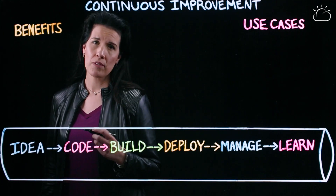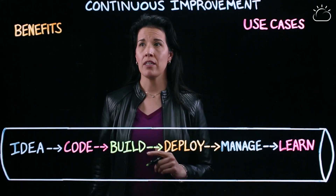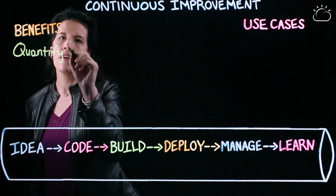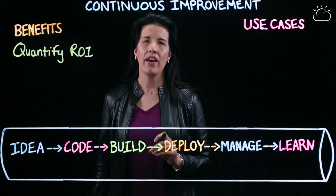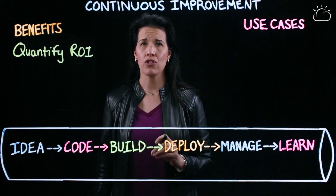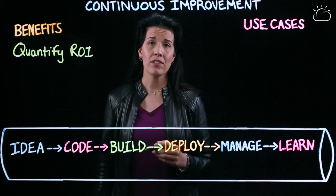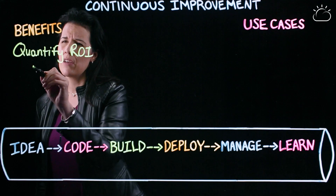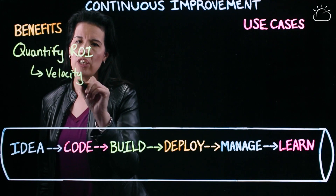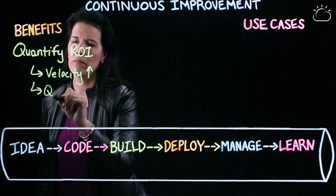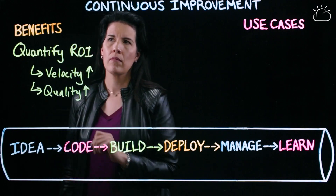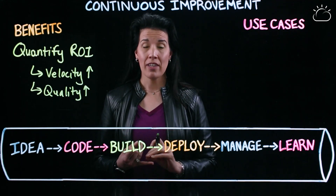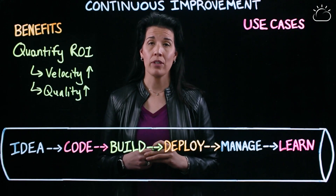When we're able to continuously improve the application delivery pipeline, we're able to quantify the return on investment. When we invest in automation tools, modifying our governance process, and investing in our people to change the way that we deliver applications, we're able to quantify the velocity and the quality that we achieve. This is all about understanding with empirical data how we're getting faster and how we're improving on the number of defects that are actually getting deployed into production.